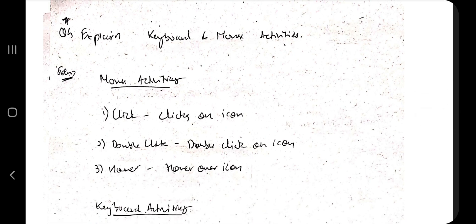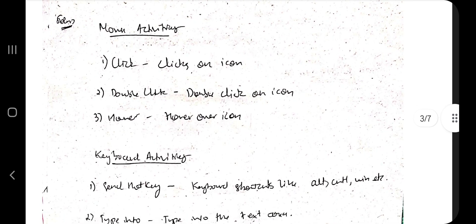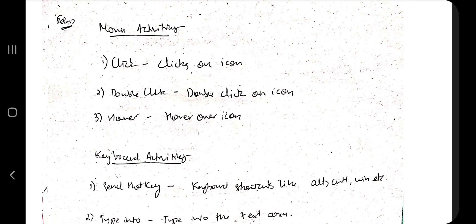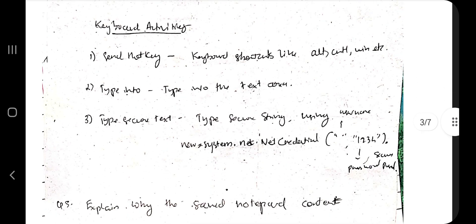Keyboard and mouse activities are a super important question. For mouse activities, there are three types: Click, Double Click, and Hover. Click clicks on an icon, Double Click double-clicks on an icon, and Hover just places the cursor on top of the icon without clicking.